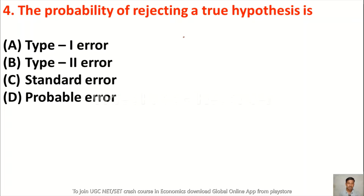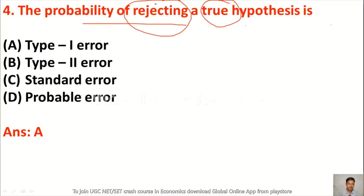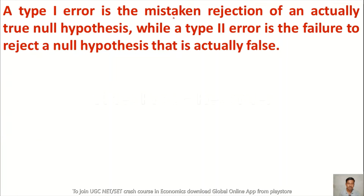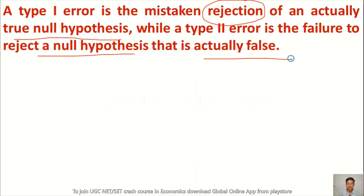Question 4: The probability of rejecting a true hypothesis is — option A type 1 error, option B type 2 error, option C standard error, option D probable error. The answer is type 1 error. If we reject a hypothesis that is actually true, it is known as a type 1 error. If you accept a false hypothesis, it is known as a type 2 error. Type 1 error is the mistaken rejection of an actually true null hypothesis, while type 2 error is the failure to reject a null hypothesis that is actually false.